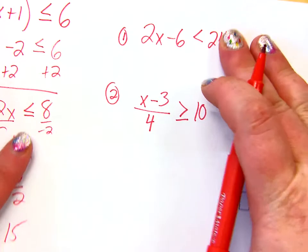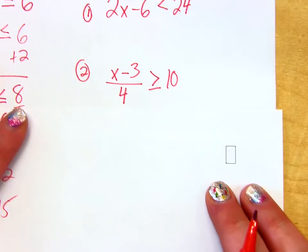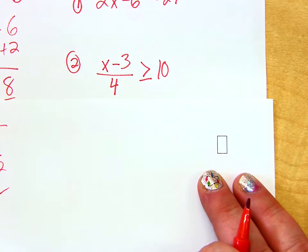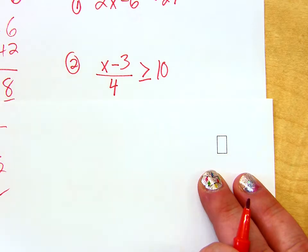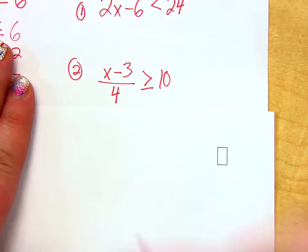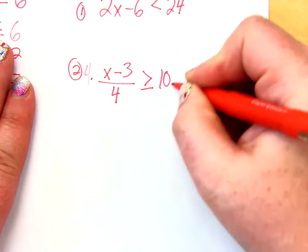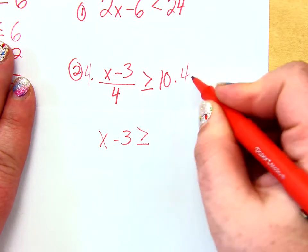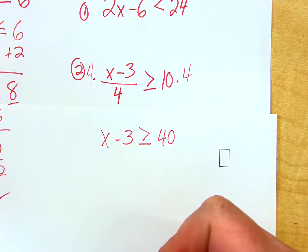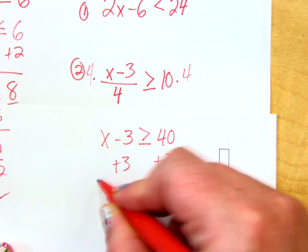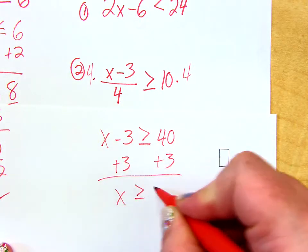Let's check out number 2 here. What would the first thing be that I have to do? Kayla, what's the first thing you do on number 2? You would multiply 4 on both sides. Correct. Multiply both sides by 4. So that's now going to get me x minus 3 is greater than or equal to 40. And then I would do what, Aiden? Add 3. That's it. x greater than or equal to 43.